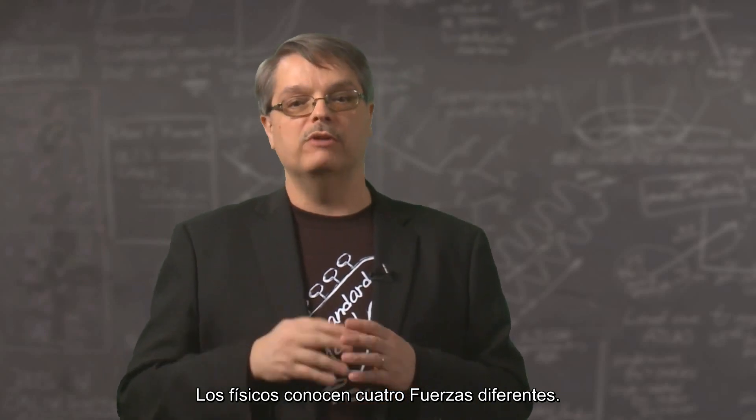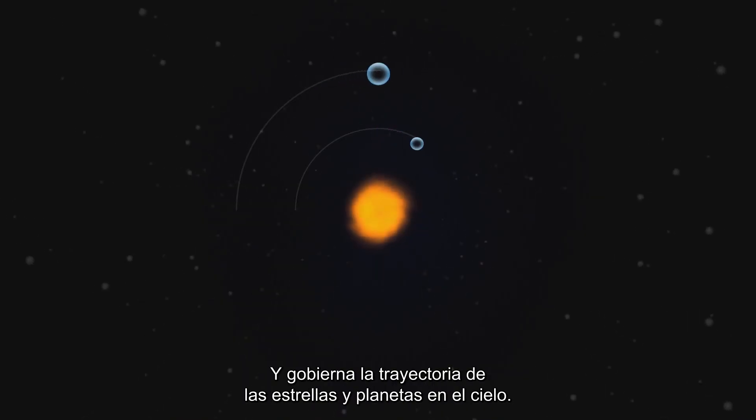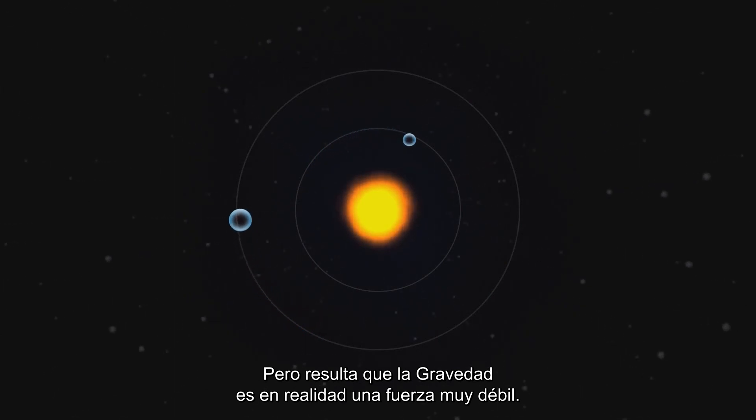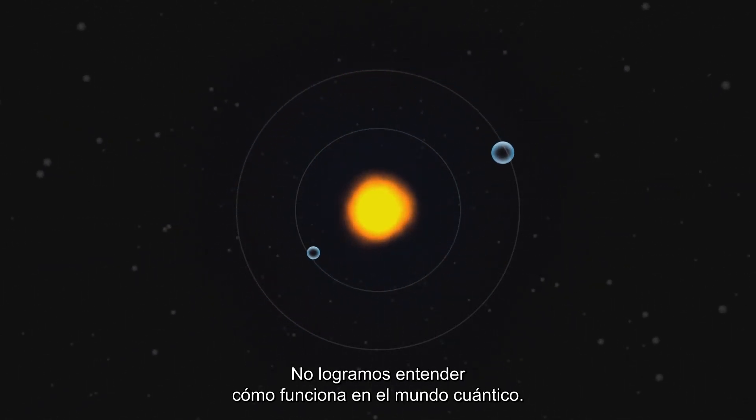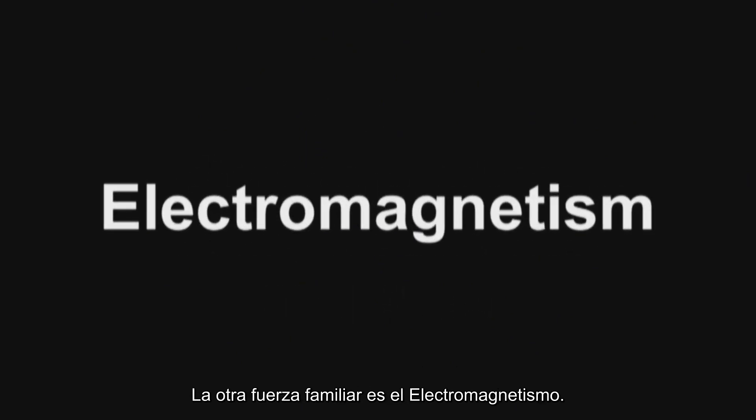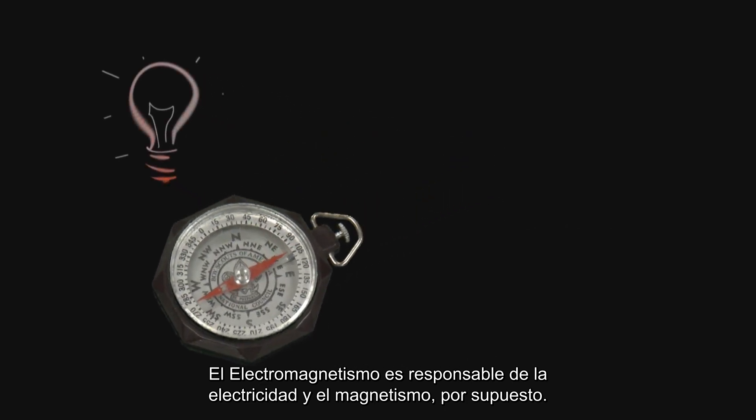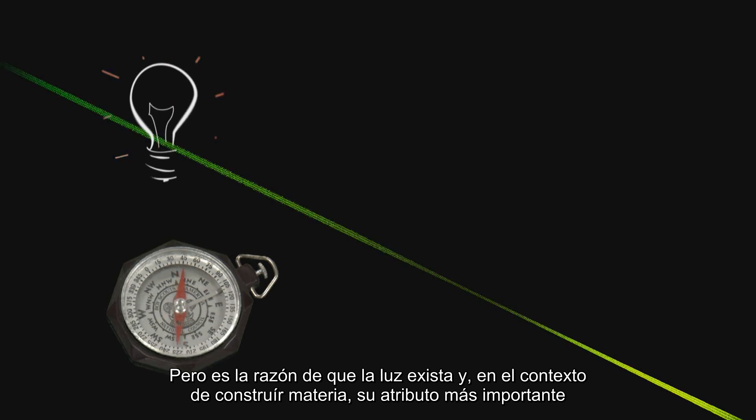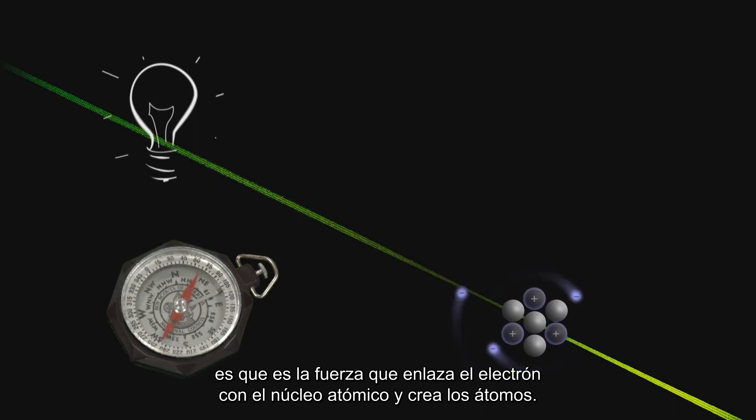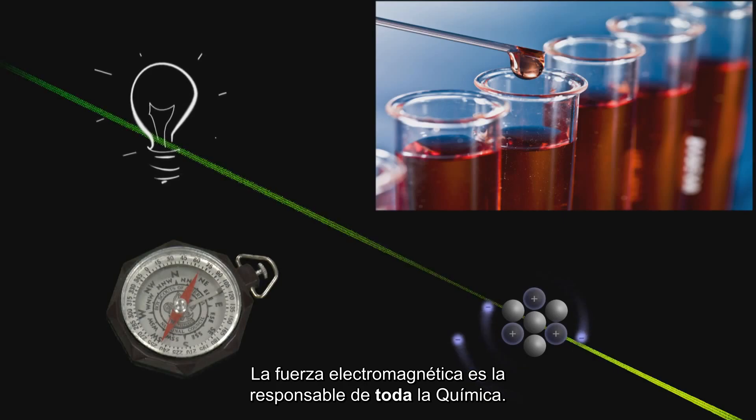Physicists know of four different forces. The most familiar force is gravity. It keeps us firmly attached to the Earth and governs the path of the stars and the planets in the sky. It turns out that gravity is actually a very weak force, and we don't understand how it works in the quantum realm. However, the three other forces are very well understood. The next most familiar force is electromagnetism. Electromagnetism is responsible for electricity and magnetism, of course, but it is the reason why light exists, and in the context of building matter, its most important attribute is that it is the force that binds the electrons to atomic nuclei and makes atoms. The electromagnetic force is responsible for all of chemistry.